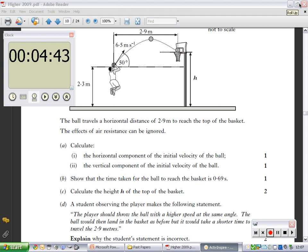So a ball travels a horizontal distance of 2.9 meters to reach the top of the basket. The effects of air resistance can be ignored. Now it's important in this line - air resistance can be ignored, which means there's no deceleration in the horizontal direction. You're given 2.9, so S in the horizontal direction.